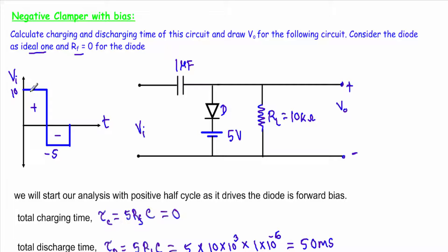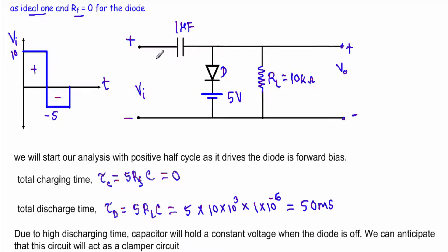I am applying an asymmetrical square wave with positive peak at plus 10 and negative peak at minus 5, therefore the analysis is a little bit more complicated. First you have to understand with which half cycle we have to start our analysis. During the positive half cycle, this terminal is positive and this terminal is negative, and the voltage is 10 volt. Since the positive terminal is connected with the p-side and the negative terminal is connected with the n-side, the diode will be in forward bias.